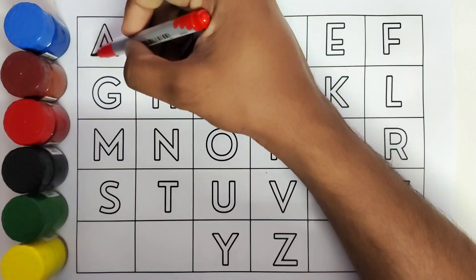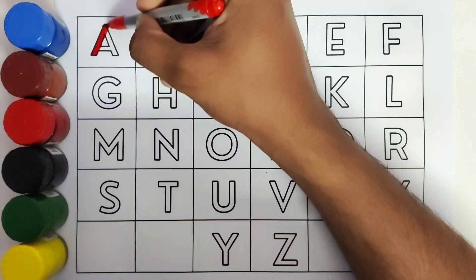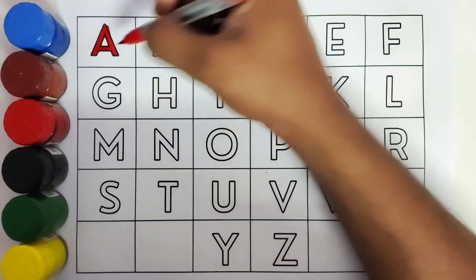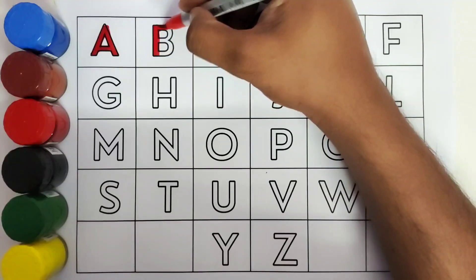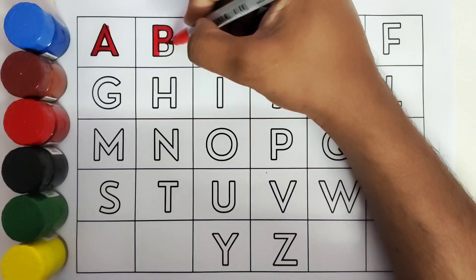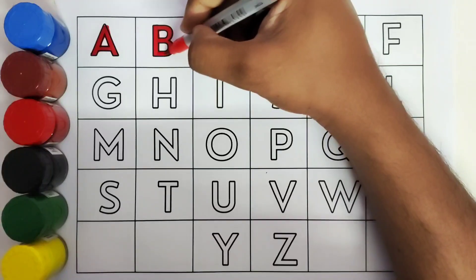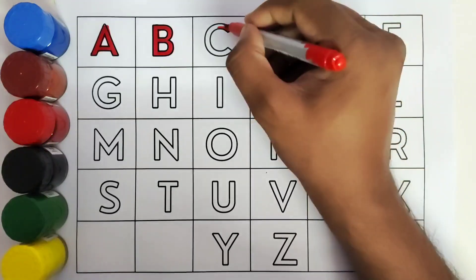This is A. A for Apple. B for Ball. C. C for Cat.